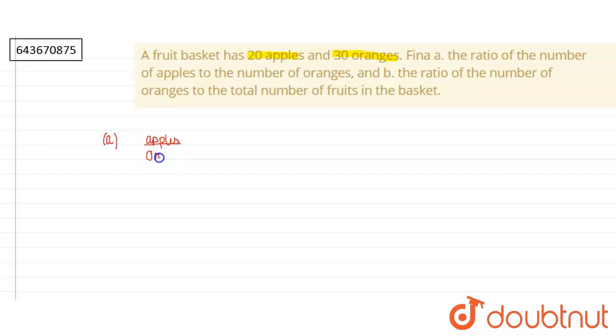So number of apples given to us are 20 and the number of oranges given to us are 30. When we cancel the zeros, we get 2 is to 3 as our ratio.